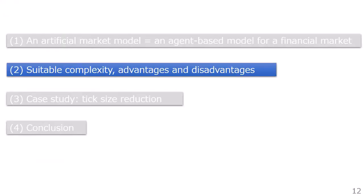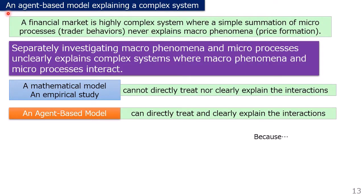Next, I will discuss suitable complexity, advantages, and disadvantages of artificial market models. A financial market is a highly complex system where a simple summation of microprocesses — for example, trade behaviors — never explains macrophenomena. Separately investigating macrophenomena and microprocesses cannot clearly explain complex systems where they interact. A mass particle model or an empirical study cannot directly treat nor clearly explain these interactions.